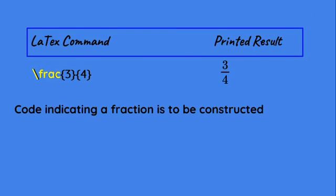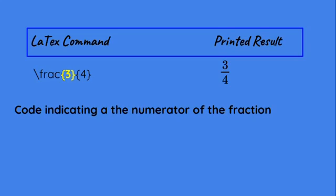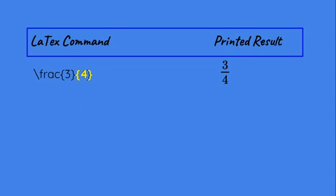The code indicating a fraction is to be constructed: backslash frac. The numerator is indicated in the first set of curly brackets as a 3. The denominator is indicated by the second curly bracket set, and that is 4. As you can see on the right, the printed result is 3 fourths.